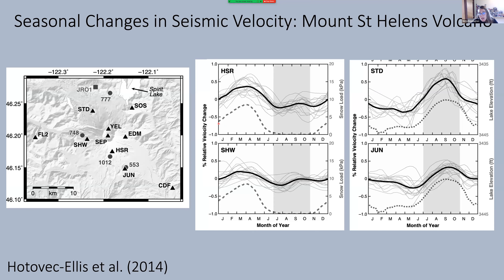Looking at this station at HSR at Mount St. Helens, near a snow telemetry site that measured snow load: the light gray lines represent changes in seismic velocity for single years over multiple years with no eruptions, and the solid dark line represents the mean change. There are significant seasonal variations — when you get really high snow load you're loading the surface and closing fractures, causing an increase in seismic velocity; conversely, as snow melts and diffuses into the subsurface, you open pore spaces and fractures, causing slowdowns. These values aren't perfectly repeatable every year — there's quite a bit of scatter.